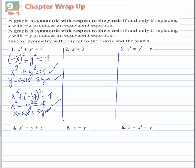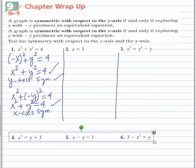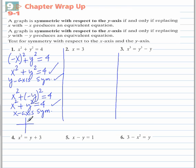Later on, we're going to learn that this equation produces a graph that is a circle with a radius of 2 with a center at (0, 0). As you can see, it has both x-axis symmetry and y-axis symmetry. Meaning if you fold the graph on the y-axis, the two sides overlap on one another.